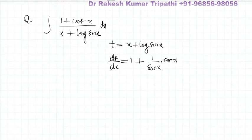dt equals 1 plus cosine by sine x, which will become cot x. On transferring dx to the right-hand side, we get 1 plus cot x dx.